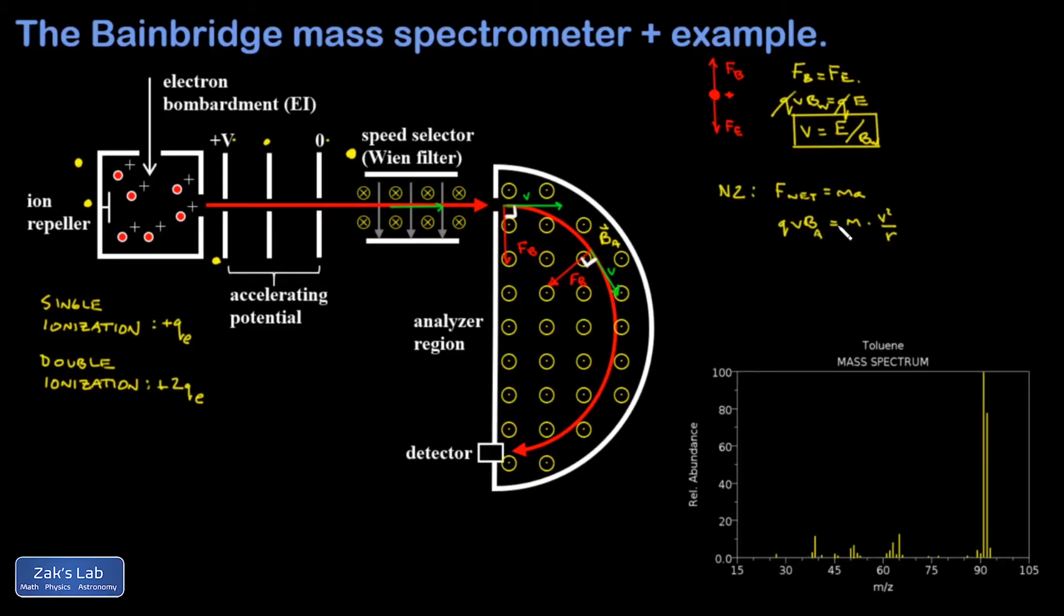Again, I should call that BA for the analyzer region. Now we can cancel one factor of V and solve for the mass-to-charge ratio. So I divide both sides by Q and multiply by R and divide by V. And I get a mass-to-charge ratio of R times BA over V.